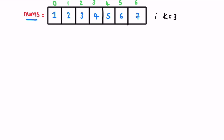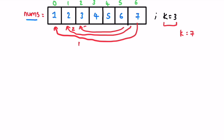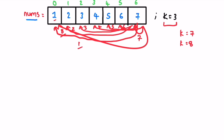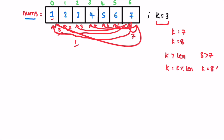Before starting our approach, we have to check if k is equal to or greater than the length of the nums array. If you rotate an array of length 7 exactly 7 times, every element returns to its original position. Similarly, rotating 8 times gives the same result as rotating 1 time. So if k is greater than the length, we set k = k mod length. For example if k=8 and length=7, then k = 8 mod 7 = 1, giving the same output.